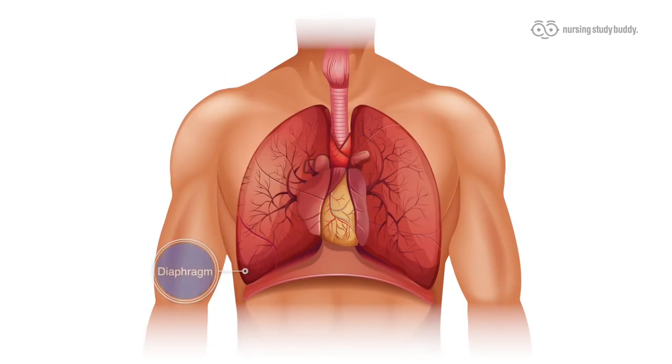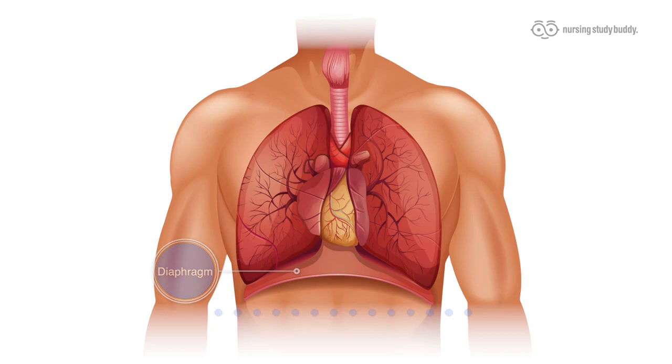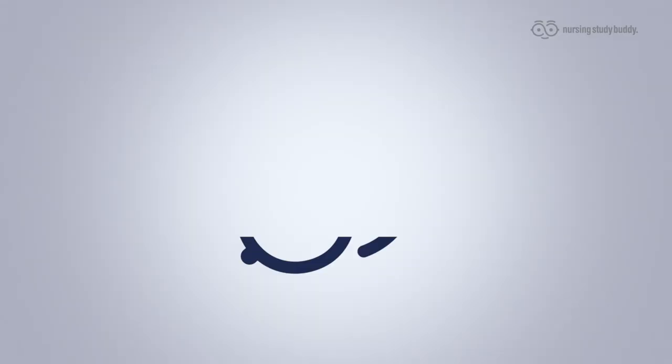In this area where the lungs sit we also have an important muscular structure called the diaphragm. The diaphragm separates the thoracic cavity from the abdominal cavity. During inhalation and expiration it expands and contracts.